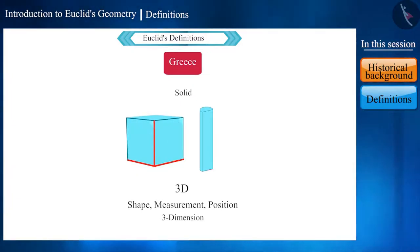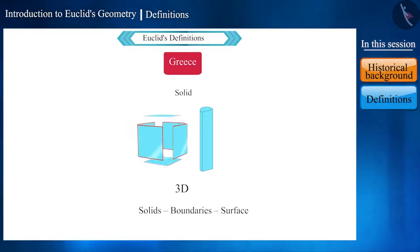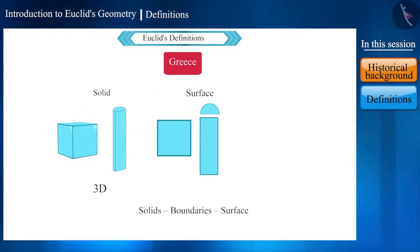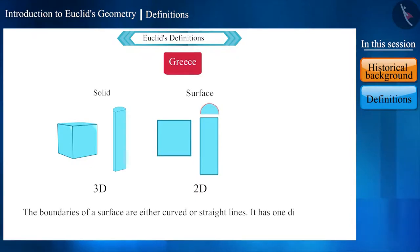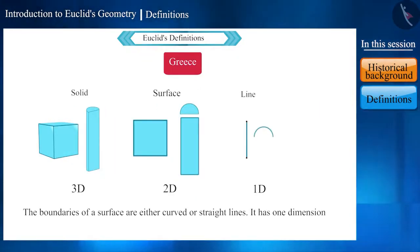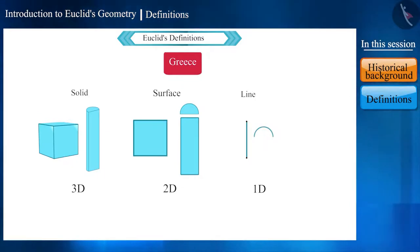For example, solid objects have shape, measurement, and position, and they can be transported from one place to another. They have three dimensions. Friends, its boundaries are called plane or surface. A surface has two dimensions and it has no thickness. The boundaries of a surface are either curved or straight lines, and it has one dimension. The ends of these lines are points, and they have no dimension.